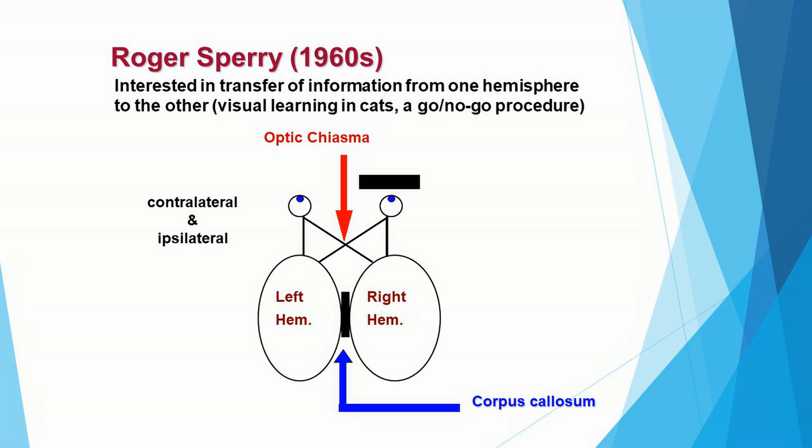Roger Sperry then cut the connection between the left hemisphere and the right hemisphere. This is a white band of tissue called the corpus callosum — a very important vocabulary term. The corpus callosum connects the two hemispheres of the brain.